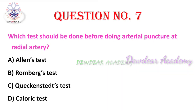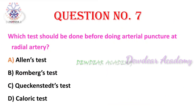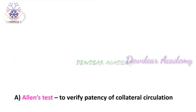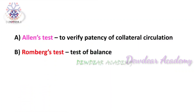Question 7: which test should be done before performing arterial puncture at the radial artery? Options: Allen's test, Romberg's test, Queckenstedt test, caloric test. The right answer is Allen's test. It is done to assess the collateral circulation before performing arterial puncture on the radial artery. If Allen's test is positive, the radial artery can be used for puncture.